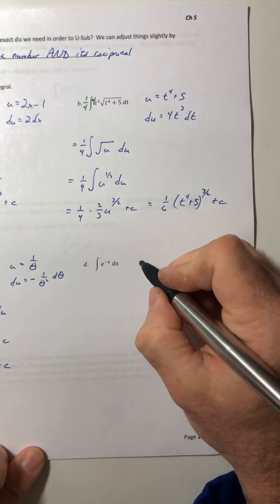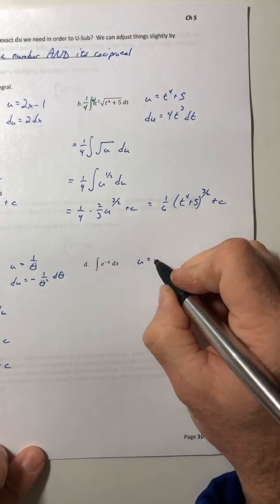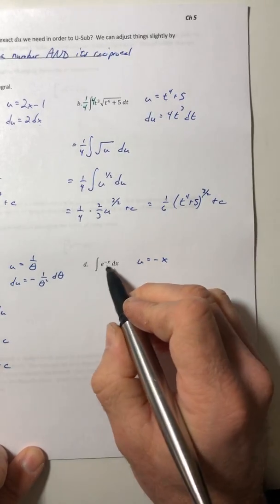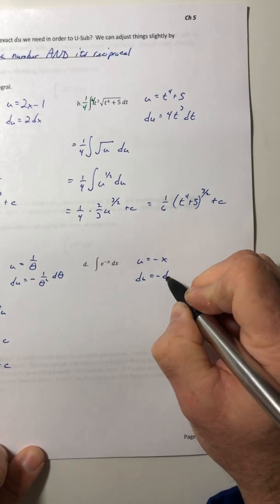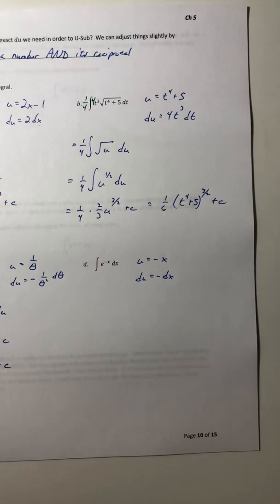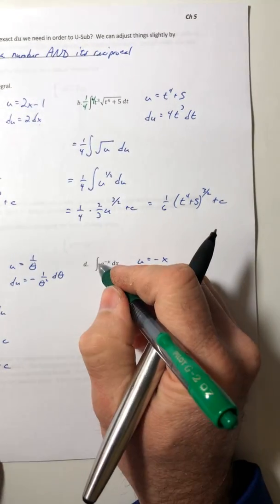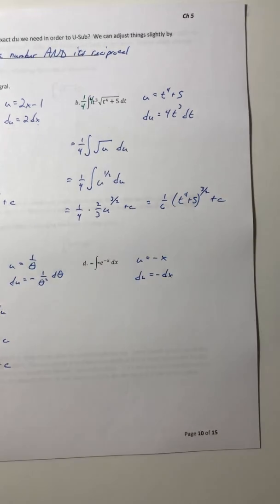Okay, and part d. We'll let u equal negative x because that's the exponent. So then the du would be negative dx. So this one I need a negative again on the inside and then a negative on the outside.